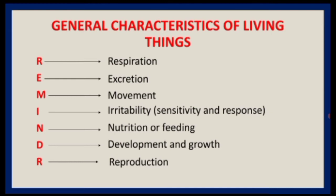Reproduction is the process whereby living organisms are able to mate and produce fertile offspring of their own kind. This process ensures that species survive generation after generation. So living things undergo these seven life processes, while nonliving things such as books, stones, pens, and pencils do not undergo any of them.